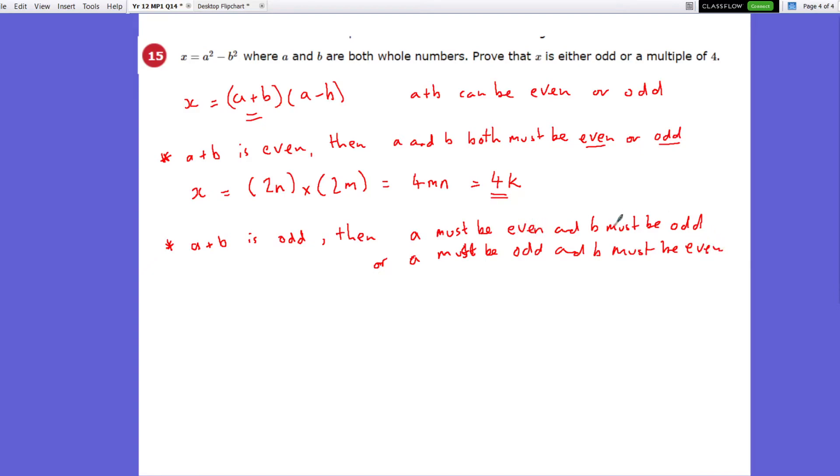Because an even and an odd, when you add those together, will end up being odd, or when a is odd and b is even, odd and an even, when you add those together, ends up being odd.